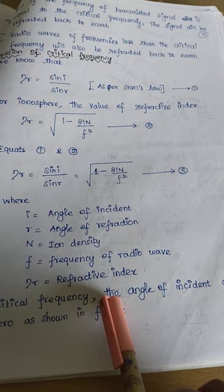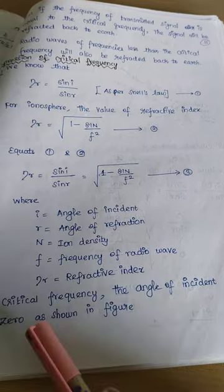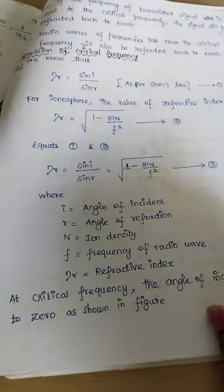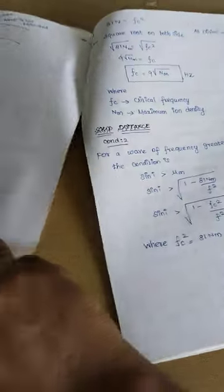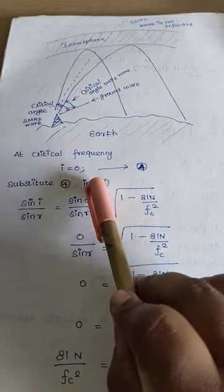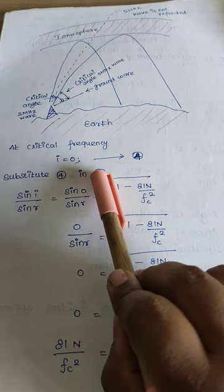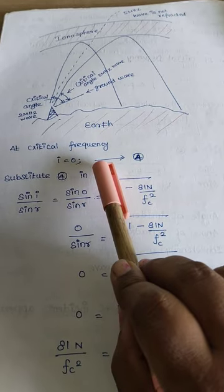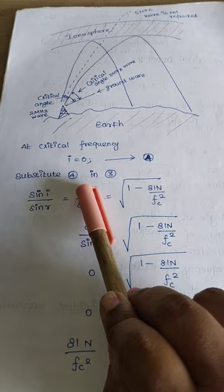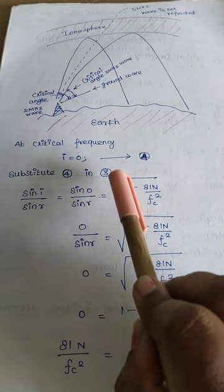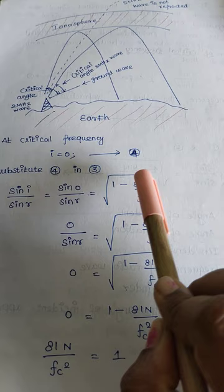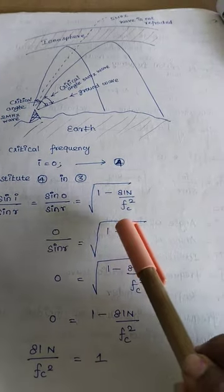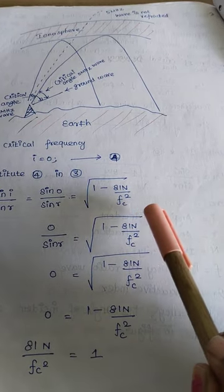At critical frequency, the angle of incidence approaches 0. So we substitute i = 0. Since the angle of incidence is equal to 0 at critical frequency, sin(i) / sin(r) becomes sin(0) / sin(r), which equals the square root of 1 minus 81n / fc². Since 0 divided by anything equals 0, the left-hand side becomes 0, giving us: 0 = square root of (1 minus 81n / fc²).